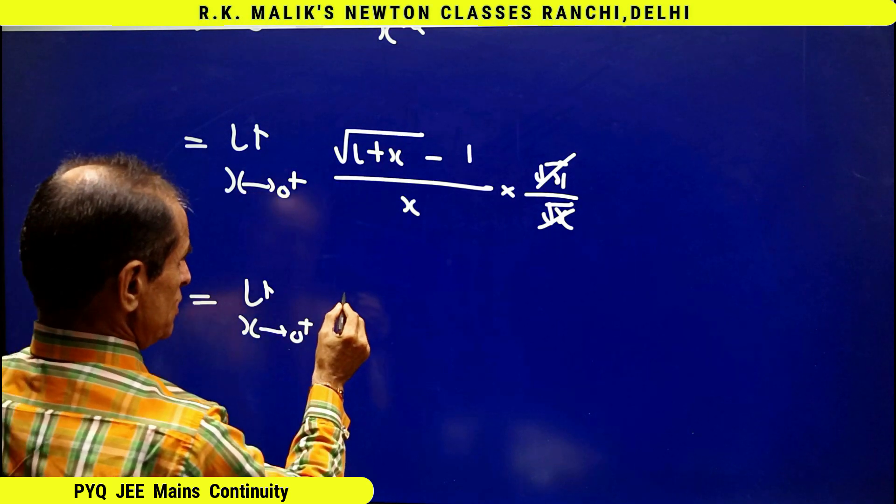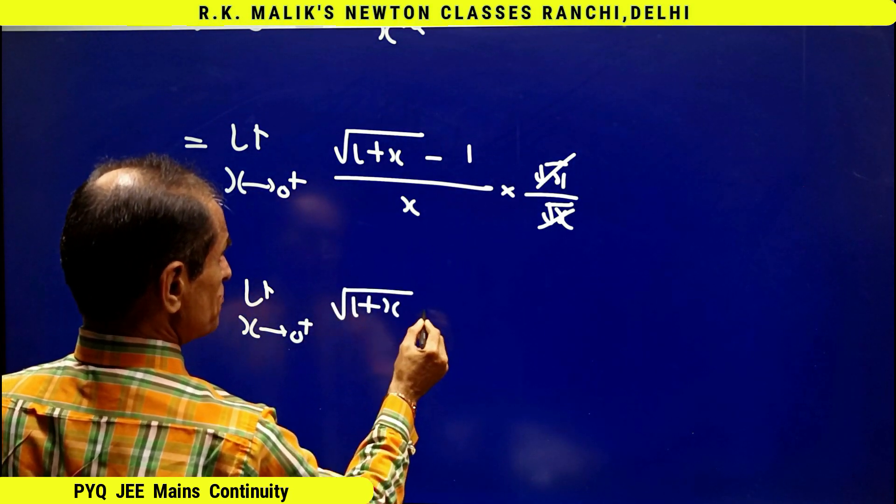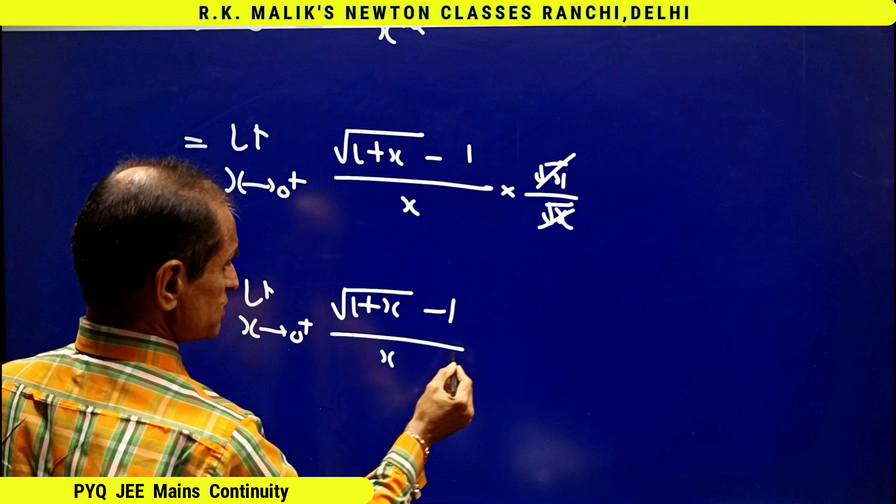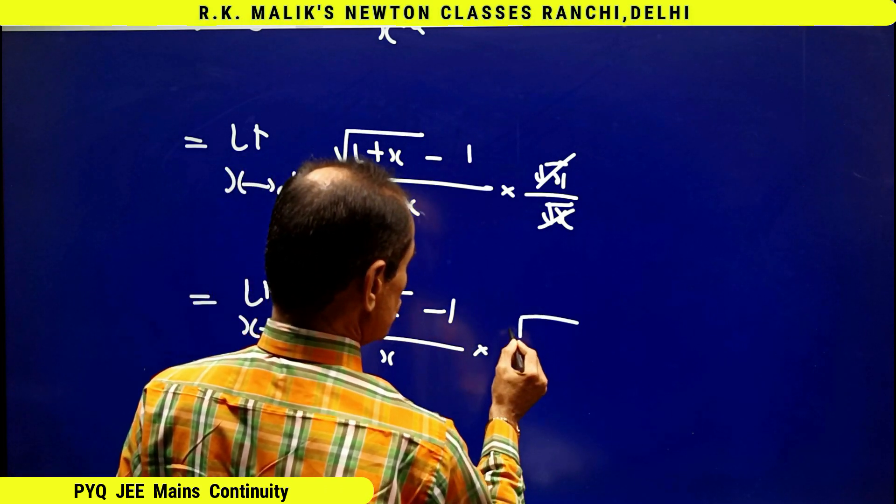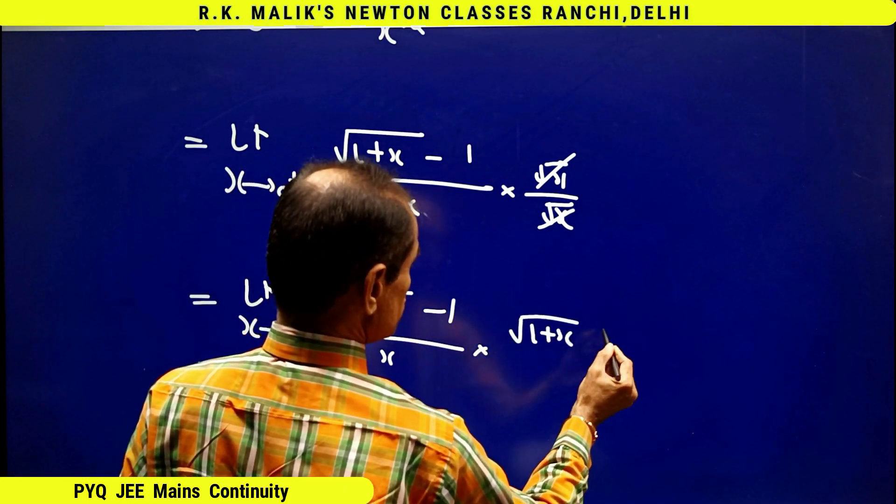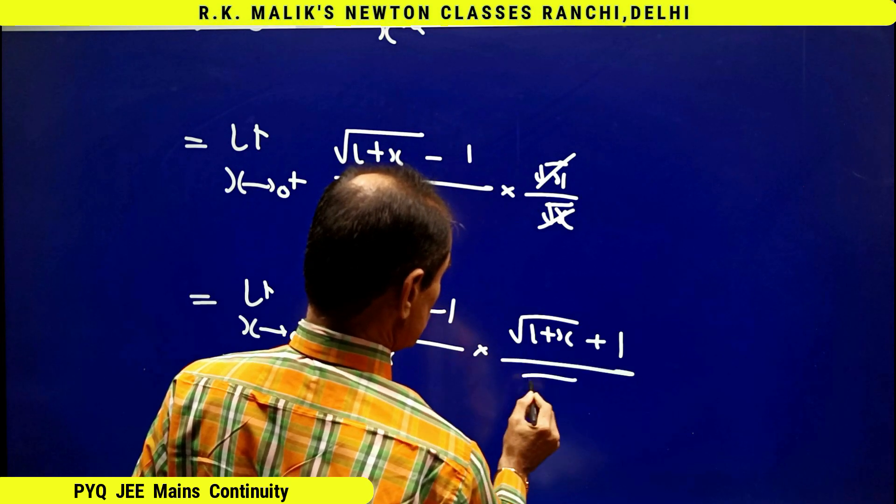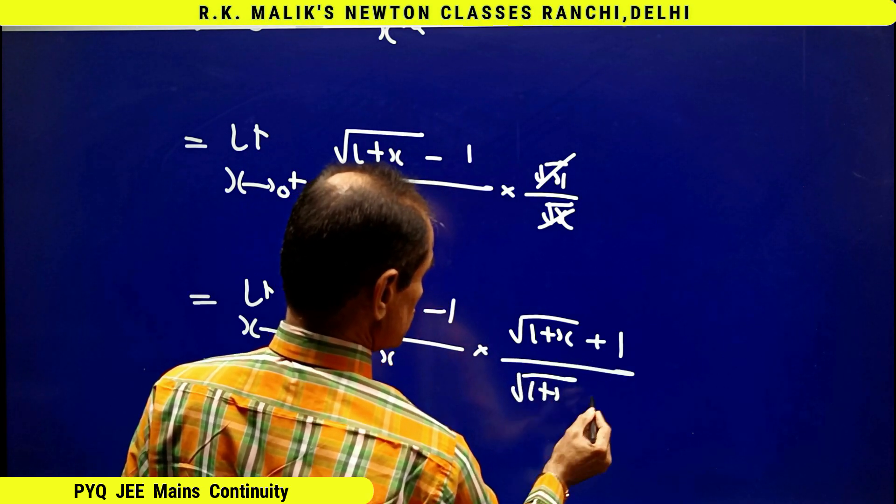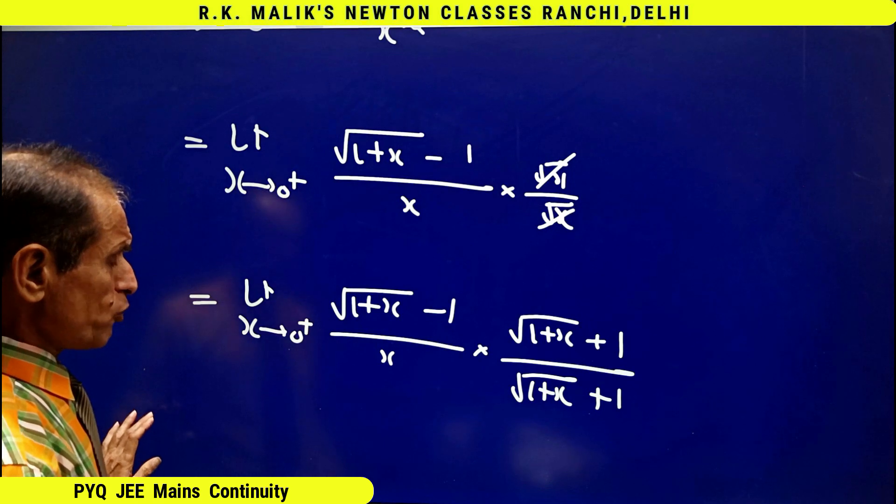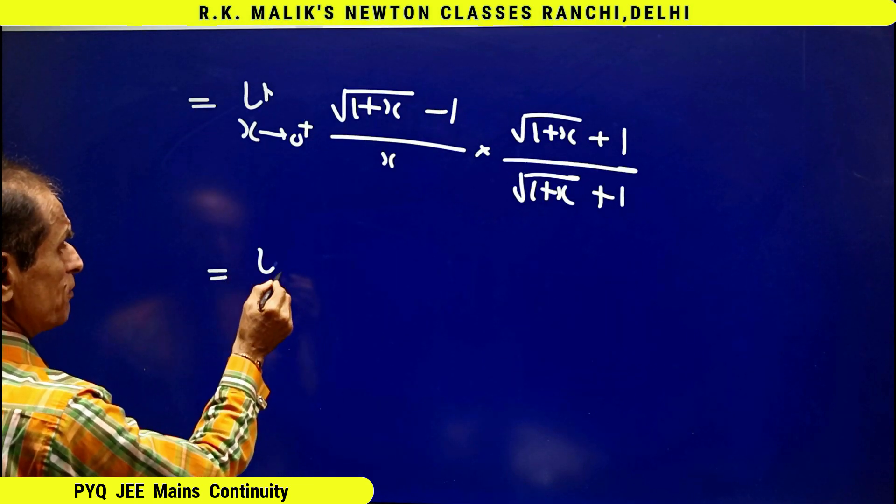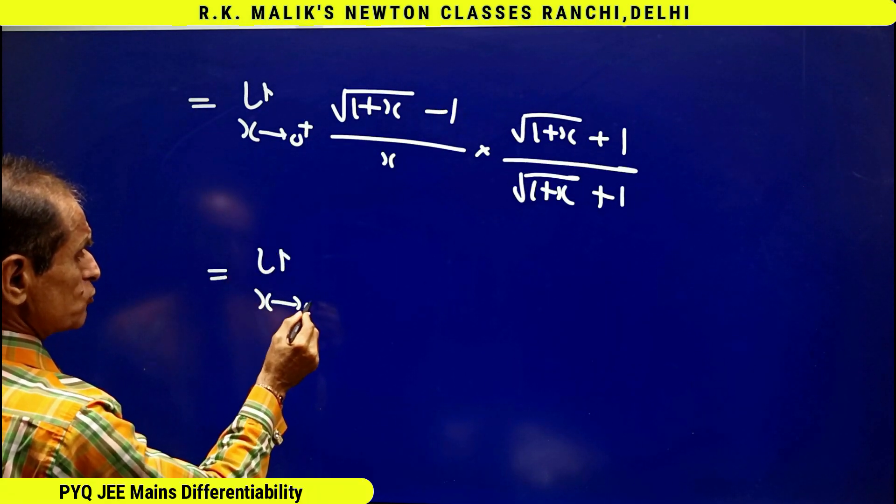√(1+x) - 1 upon x times √(1+x) + 1. This is just rationalization, you must be knowing it. This is equal to limit x tends to 0 plus.